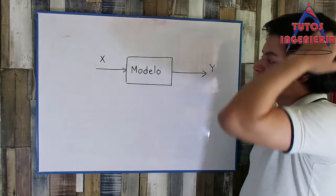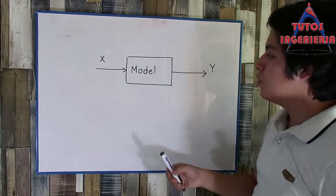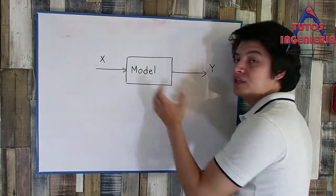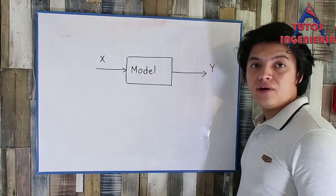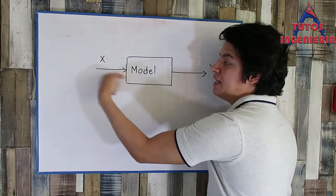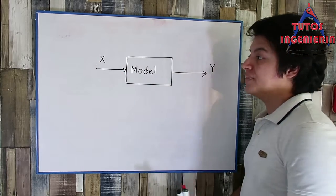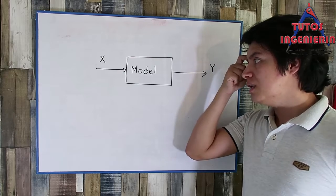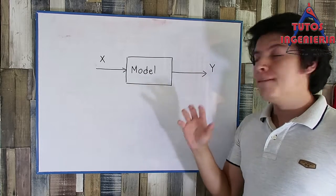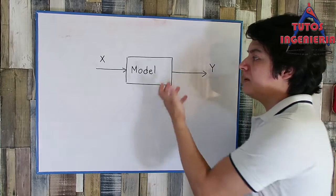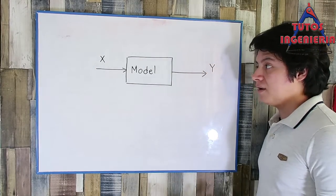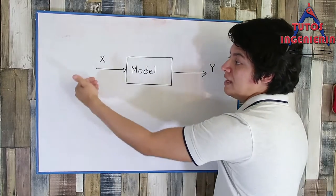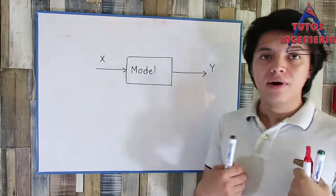We start the main discussion: the most important thing for a plant is to know its model. The model of the plant is very important because we have to relate the inputs and the outputs — how the inputs affect the outputs. There are control techniques that do not need a model, but for this video we need the real model of our car. The model is the relation between the inputs and outputs.